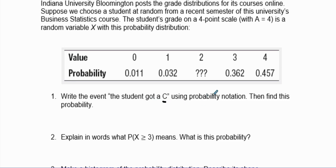Write the event that the student got a C. Find this probability. Each one of these has to add up to be one from our previous property of distributions. So we have, if we take 1 minus 0.011 plus 0.032, we add all these different values together: 0.362 and then 0.457. We add all together and subtract that from one.